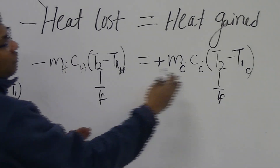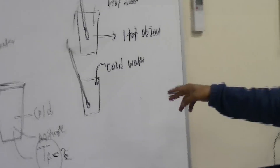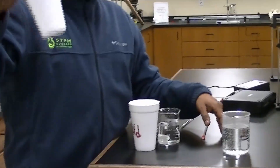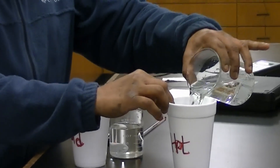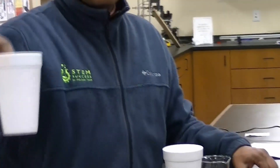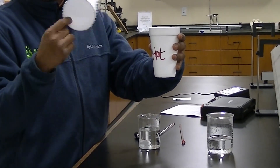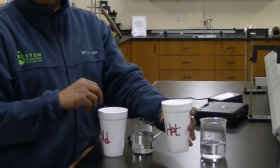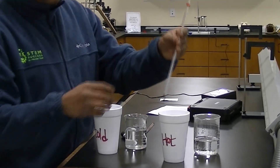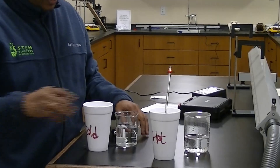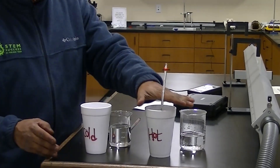The heat lost by the hot water equals the heat gained by the cold water. Whatever final temperature you calculate, you should observe that same temperature experimentally after mixing. I take the empty styrofoam cup, measure its mass, then add hot water and remass it. Subtracting the empty mass gives the mass of the hot water. Then I measure the temperature of the hot water using a thermometer and let it stand.